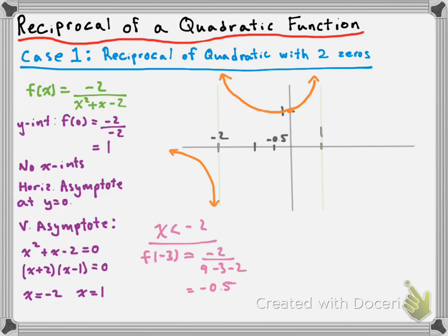Next, we check the last interval where x is greater than one. Picking x equals two, we check f of two: negative two over four plus two minus two gives us negative 0.5. Again, the sign is what matters — it's negative. So the function is below the x-axis on that interval, approaching our vertical and horizontal asymptotes. That's case one: two vertical asymptotes because the quadratic in the denominator has two zeros.